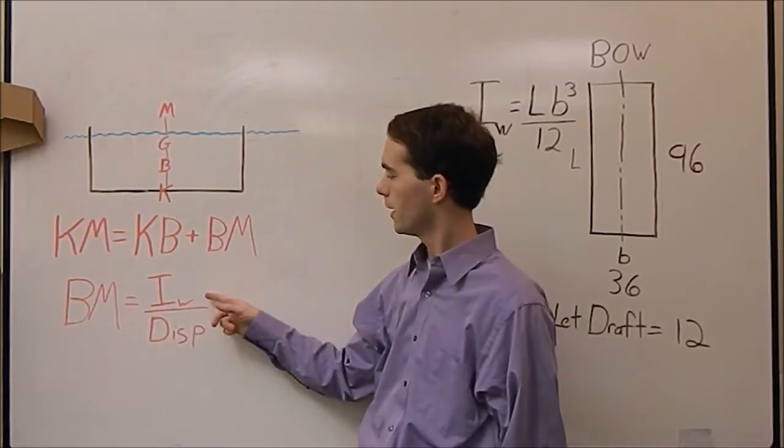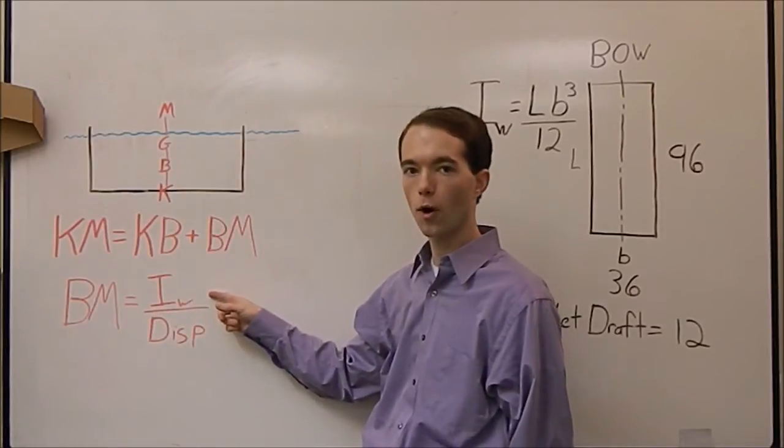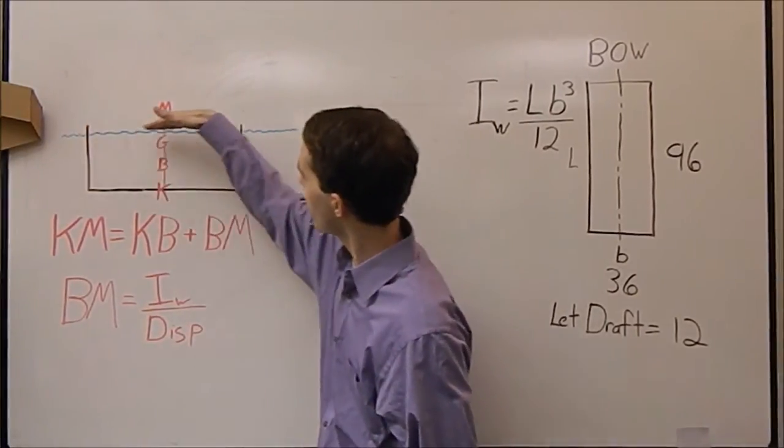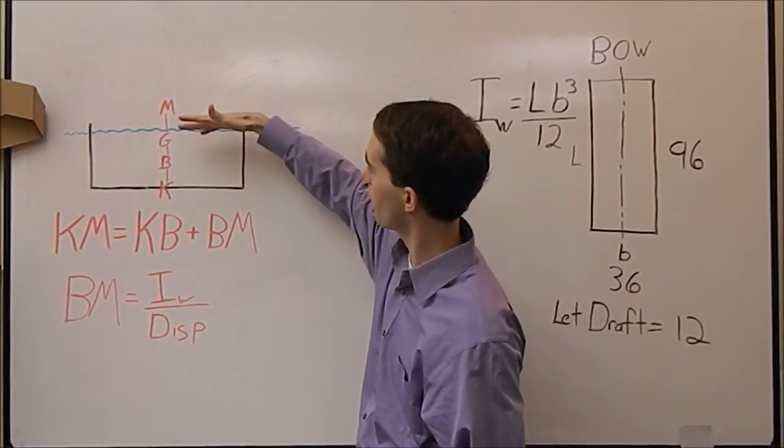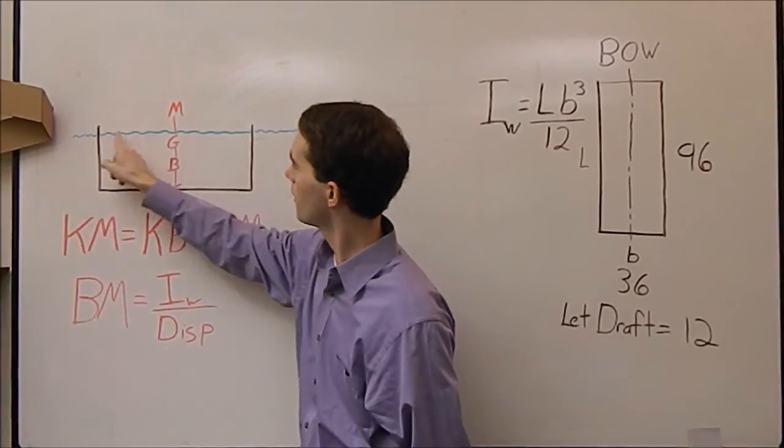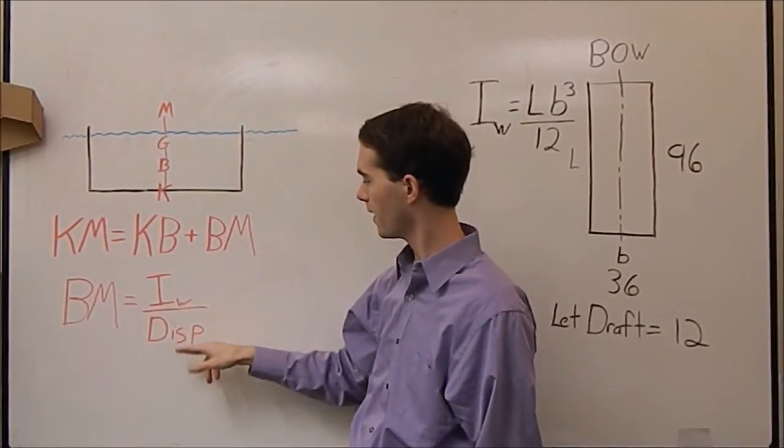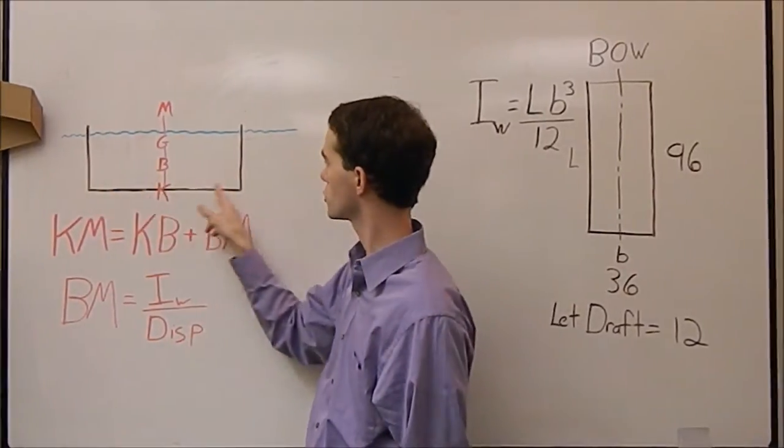BM is defined as the inertia of the water plane area. The water plane area is this area right here. If you were to look at your boat from the top, what is the shape that is just touching the water? And we take that and divide that over the displacement.